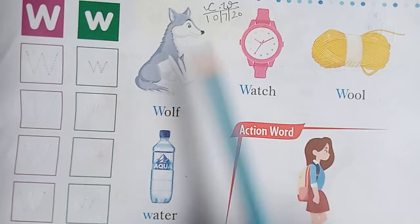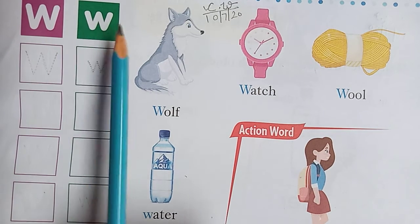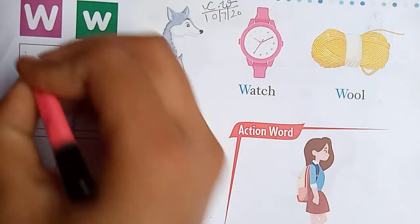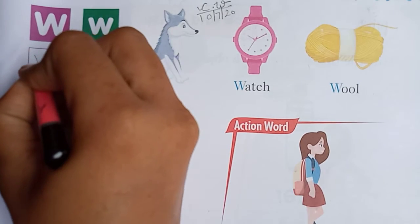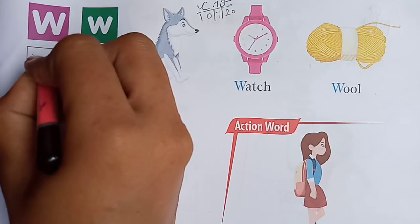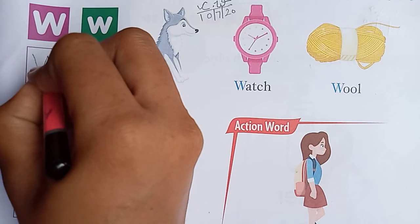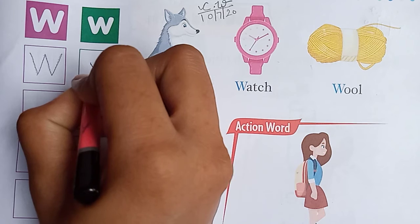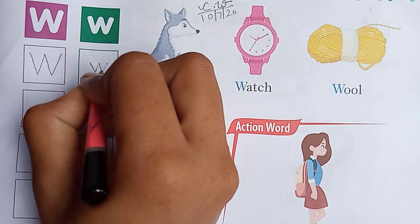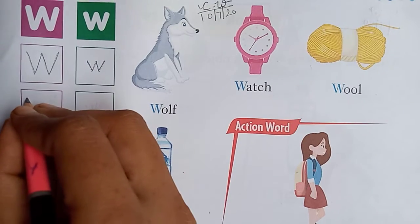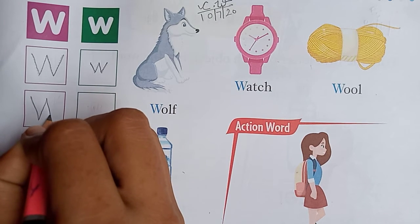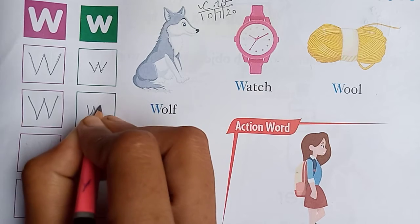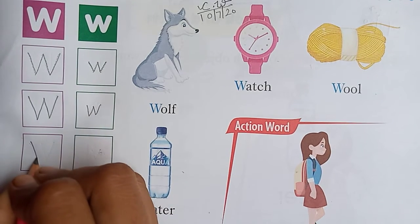What's your right? Date. Capital W, small w. Look here, students. Capital W. Okay. Slide over here. Capital W.